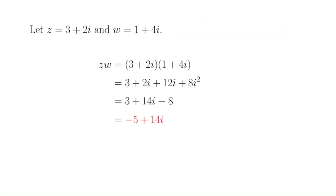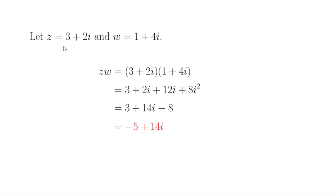Let's suppose we have two complex numbers, we'll call them z and w. To be concrete, let's let z be 3 plus 2i and w be 1 plus 4i. We can multiply out z times w, and it turns out what you end up getting is negative 5 plus 14i.